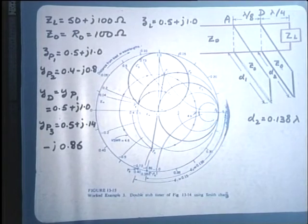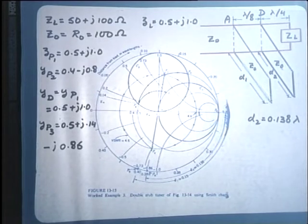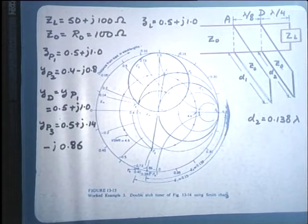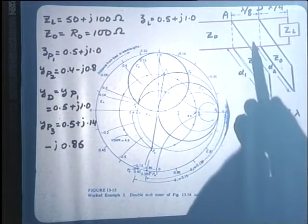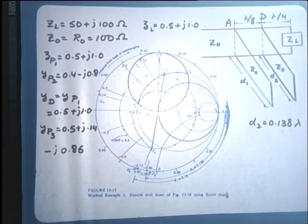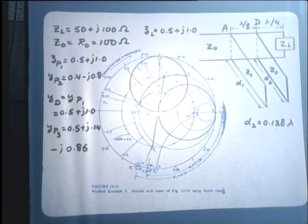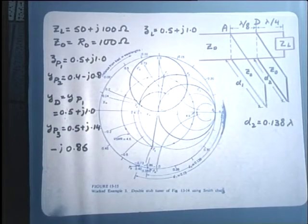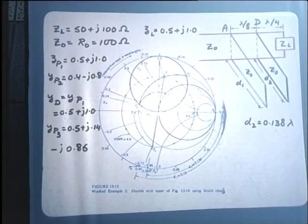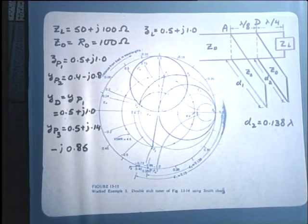A student asks: at point P3 the conductance is 0.5, so why doesn't it remain constant as we move to plane A? The answer is that only the reflection coefficient magnitude remains constant when moving along a transmission line — we move on a constant VSWR circle. As impedance transforms along a line, both the real and imaginary parts change. So it should not be surprising that the conductance changes as we move from P3 to P7.